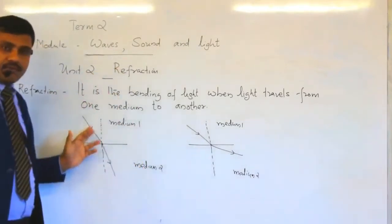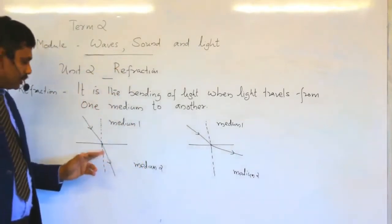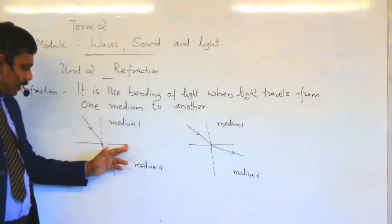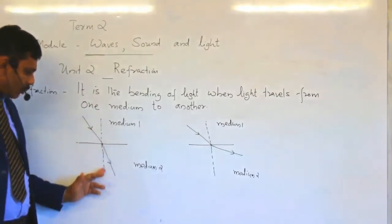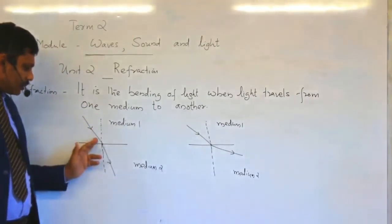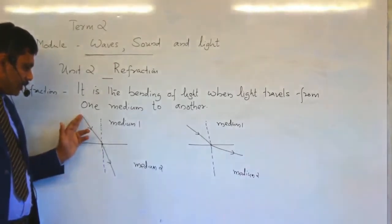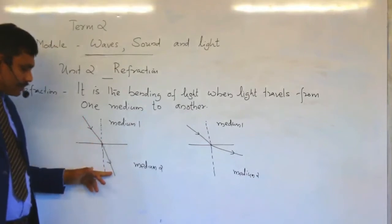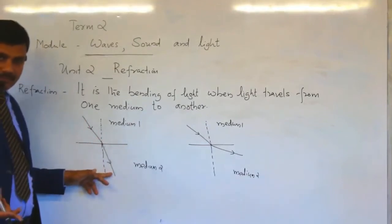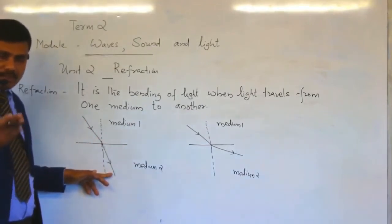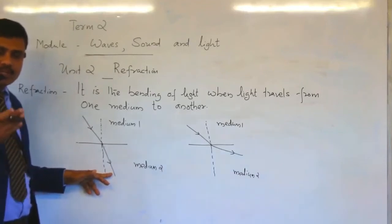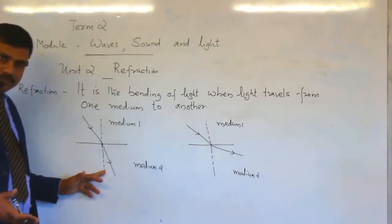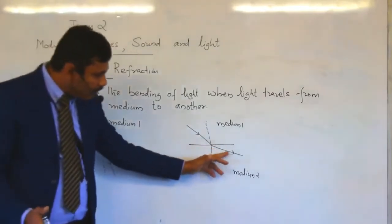But when light travels from one medium to another, look at this. This is the boundary between the media. This is the normal. Here is the incident ray. When light travels from one medium to another, its path gets deviated from its original path. It can be toward the normal or away from the normal.